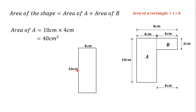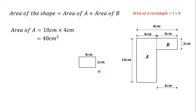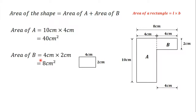Shape B is also a rectangle with a length of 4 centimeters and a breadth of 2 centimeters. The area of a rectangle is length times breadth, so the area of shape B is 4 centimeters times 2 centimeters, which gives us 8 centimeters squared.